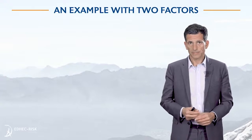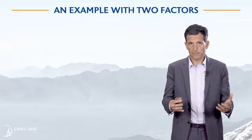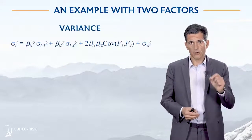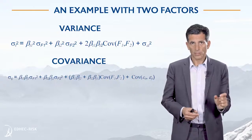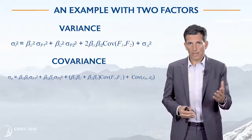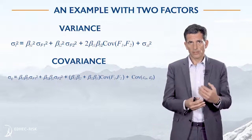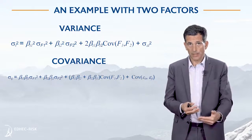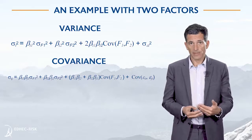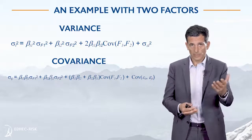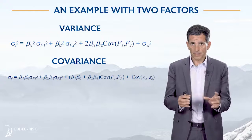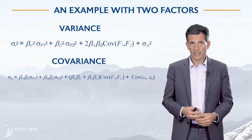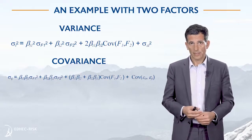We can use the factor model, doing some straightforward mathematical development, to get an expression for the variance and the covariance of stock returns based on the factor models. What we find is the variance of a given stock can be obtained as a function of the beta of the stock with respect to the factors and also as a function of the variance of the factors. We are also involving in general the covariance between the factors, but very often we are trying to use uncorrelated factor returns.